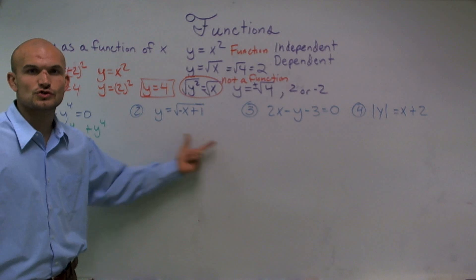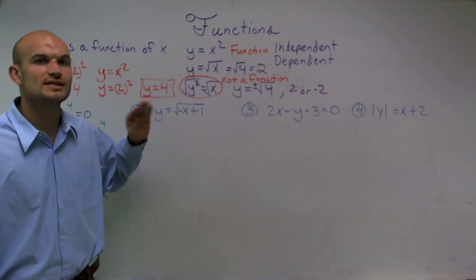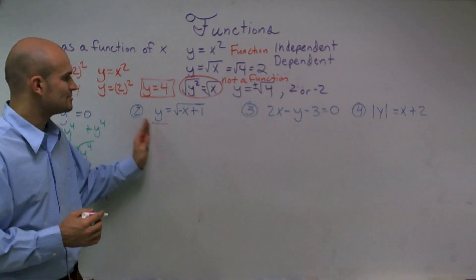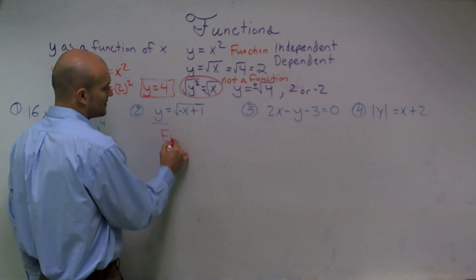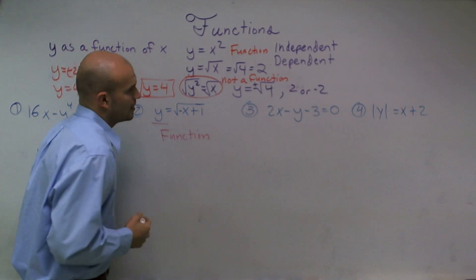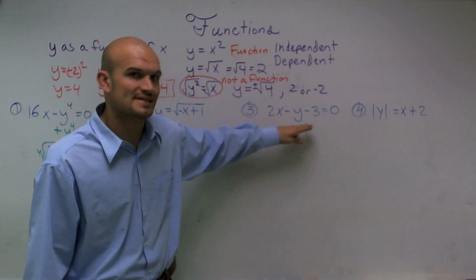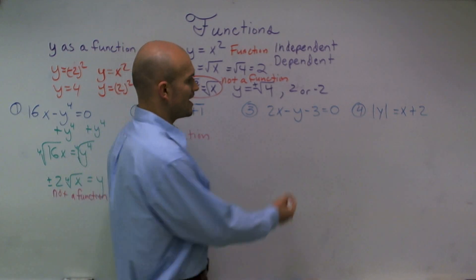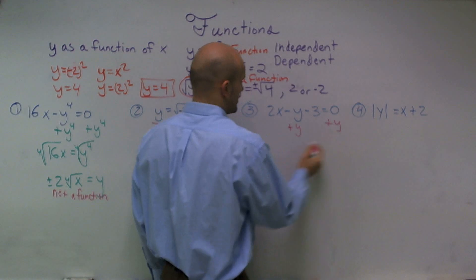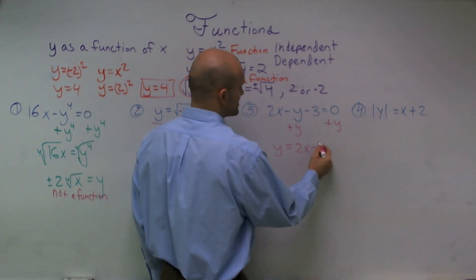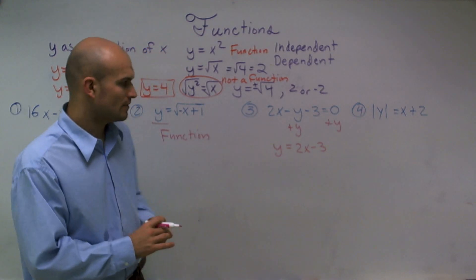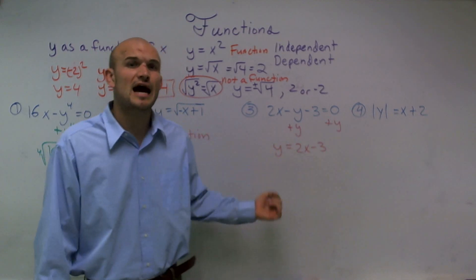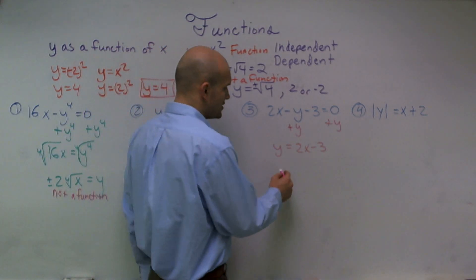Over here, I did not take the square root of both sides, so I can only assume the positive root. My equation is already solved for y and I am just assuming the positive root — therefore, this is a function. For the next one, I need to get my y's on one side and everything else on the other side. I add y to the other side and rewrite it as y equals 2x minus 3. Every single number I plug in for x is going to give me a unique output — therefore, this is going to be a function.